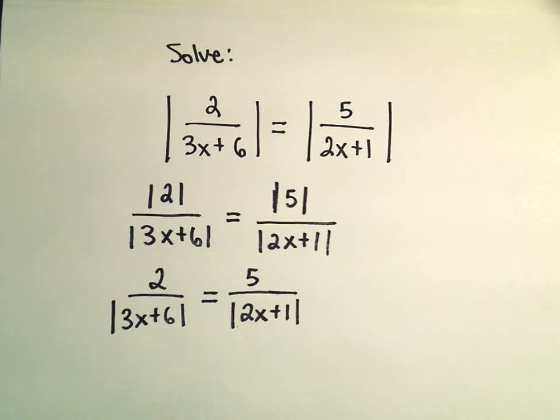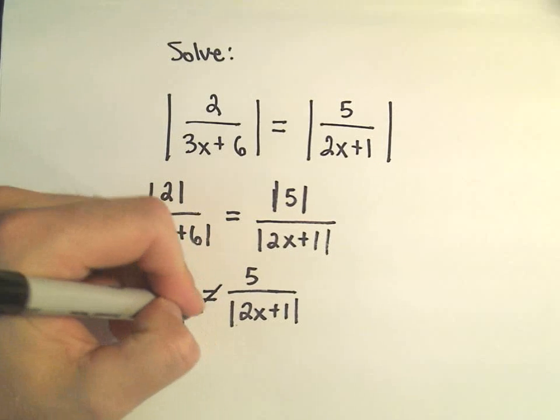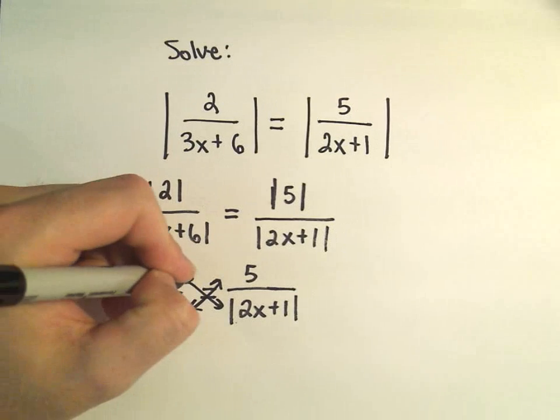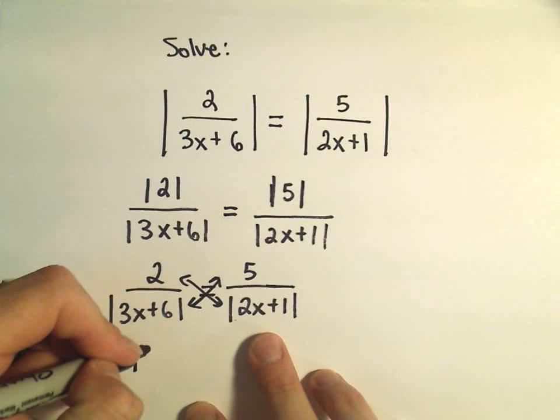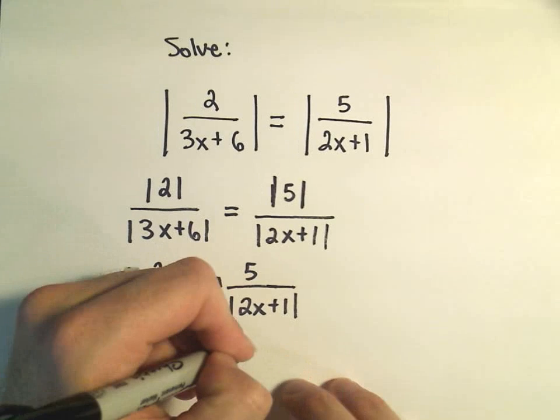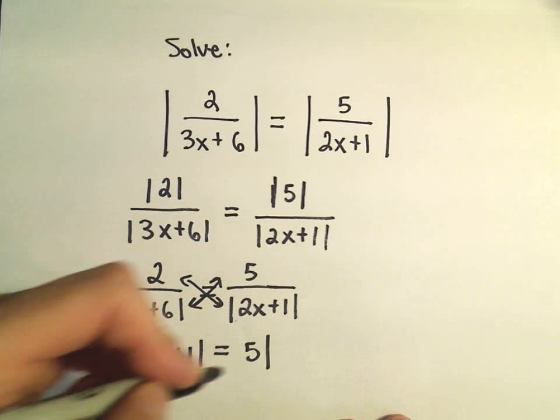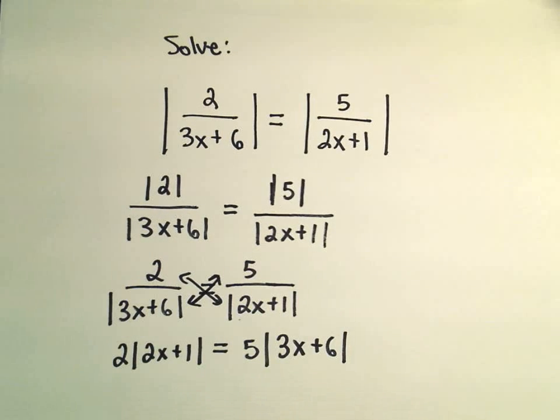Okay, so what I'm going to do now is simply get rid of the fractions. To do that I'm just going to cross multiply here. So on the left side we'll get 2 times the absolute value of 2x plus 1 equals 5 times the absolute value of 3x plus 6.